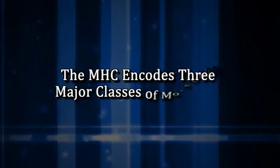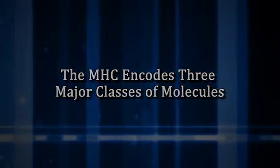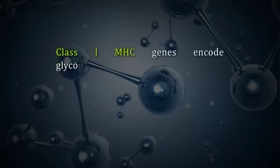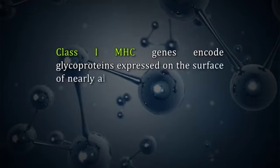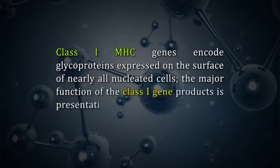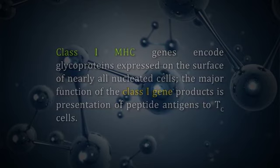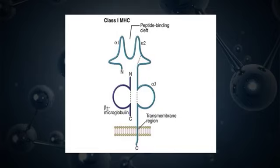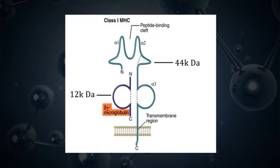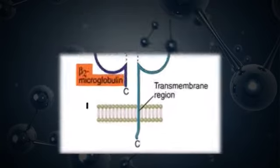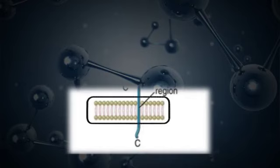The MHC encodes three major classes of molecules. Class 1 MHC genes encode glycoproteins expressed on the surface of nearly all nucleated cells. The major function of class 1 gene products is presentation of peptide antigens to TC cells. It consists of a heavy polypeptide chain of 44 kilodaltons non-covalently linked to a smaller 12 kilodalton polypeptide called beta-2 microglobulin. The largest part of the heavy chain is organized into three globular domains which protrude from the cell surface.